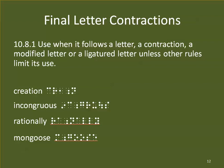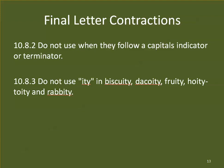Some examples of final letter contractions used differently in UEB: 'Creation' — we don't have the ATION contraction anymore, but we still have TION. That frees up E-A, so we use the E-A contraction and then T-I-O-N. In 'congress,' we can use the O-N-G contraction. 'Rationally' will look stretched out — we have A-R-A then T-I-O-N, and we're not using A-L-L-Y anymore. 'Mongoose' — we can use O-N-G even though it goes across syllables. We cannot use final letter contractions after a capitals indicator or a terminator, because those are not letters.